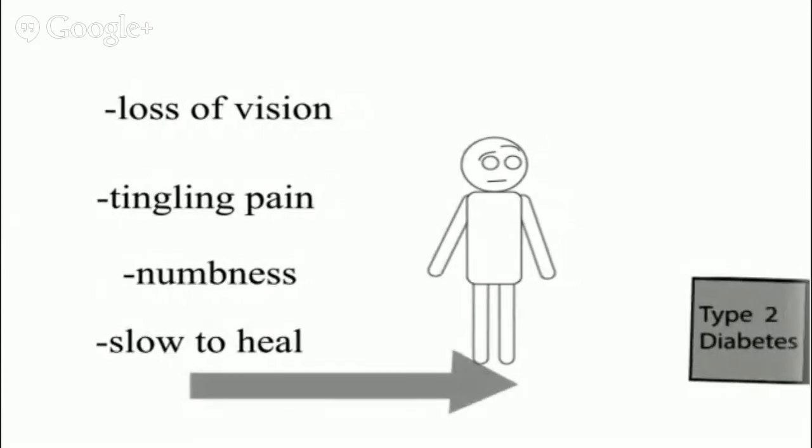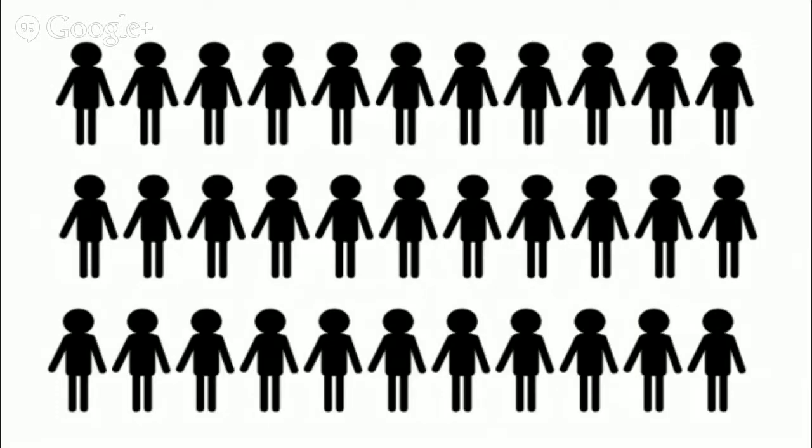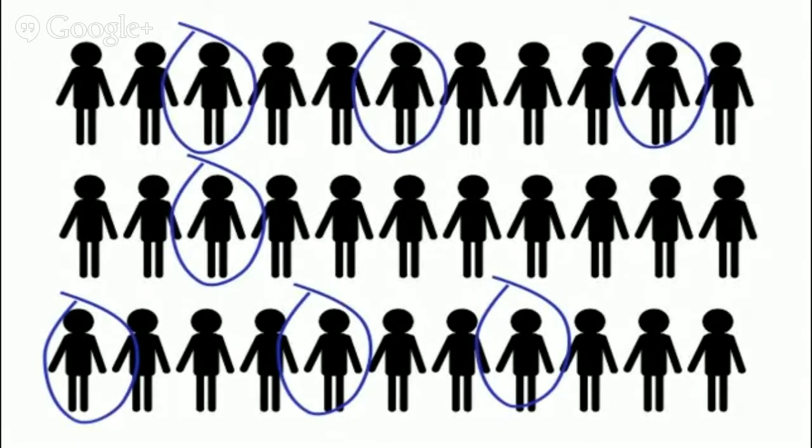All of these symptoms point to one thing, they are all symptoms of type 2 diabetes. Type 2 diabetes is a chronic disease affecting millions of people worldwide today. But it's the millions who haven't been diagnosed that face really serious problems.